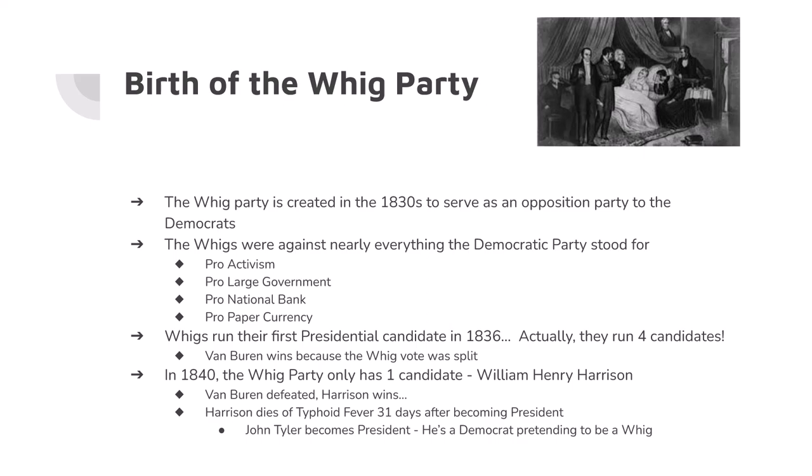By 1840, the Whigs have smartened up and only run one candidate — William Henry Harrison, a war hero from the War of 1812. He becomes president at the age of 68. To prove he was still young, he gave a two-hour-long inaugural speech. It started to rain, he got sick, and he died of typhoid fever exactly one month after becoming president.